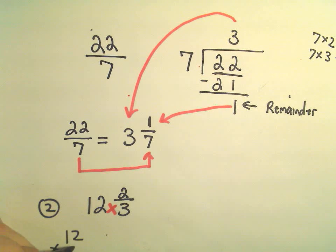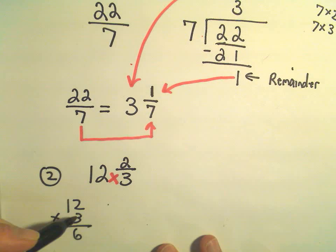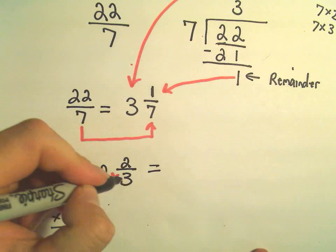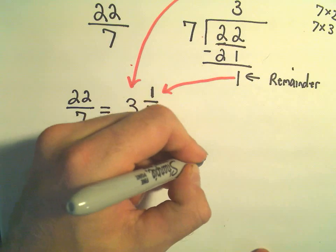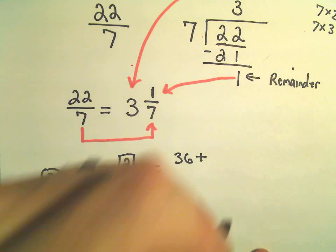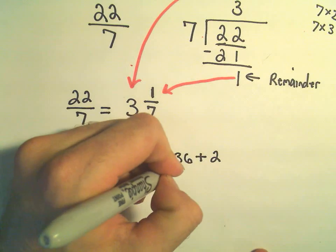Let's see, three times twelve, if we multiply that, three times two is six, three times one is three, so we're going to get thirty-six. So three times twelve is thirty-six, and then I add to that whatever the number on top of my fraction is, so thirty-six plus two.